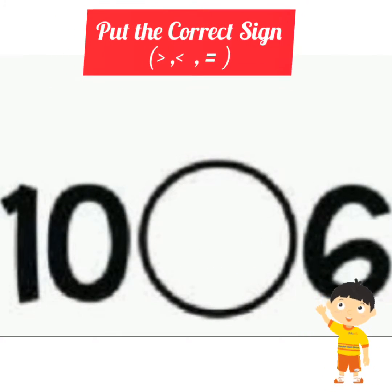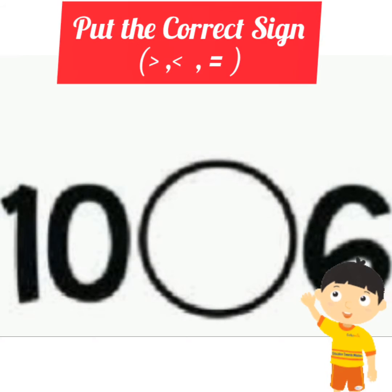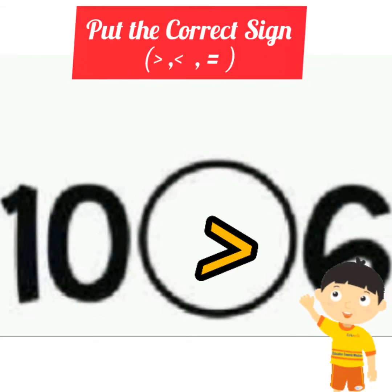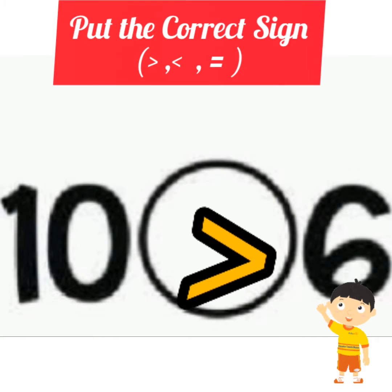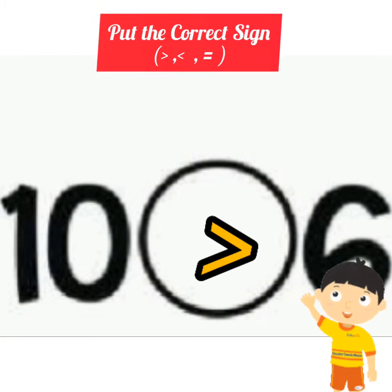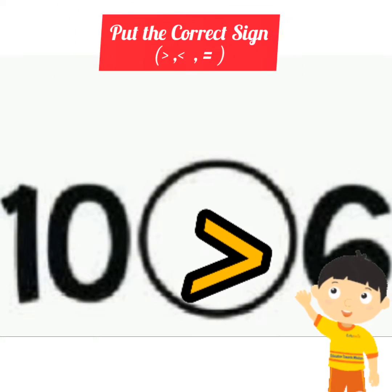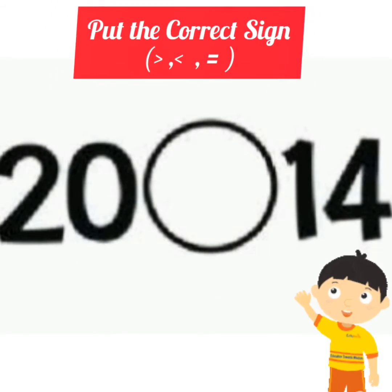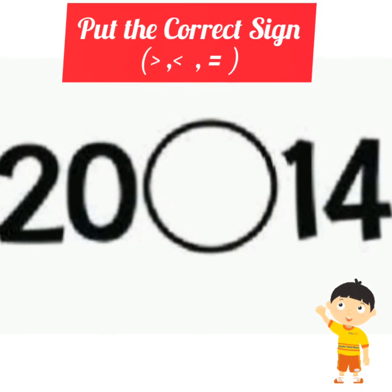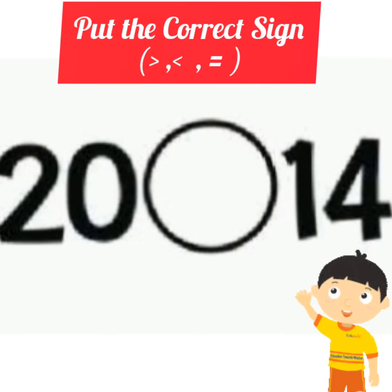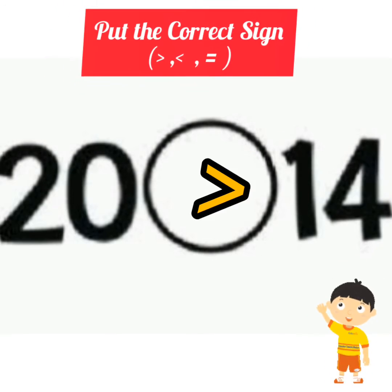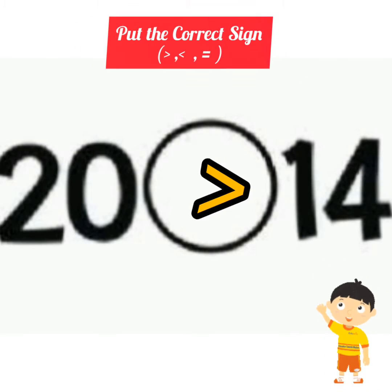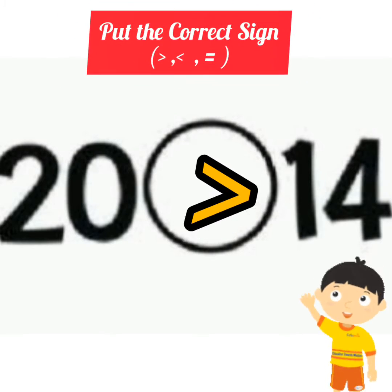Next numbers are ten and six. Which one is the greater number? Koon sa number bada hai? Ten. Next numbers are twenty and fourteen. Which one is greater? Twenty is greater than fourteen.